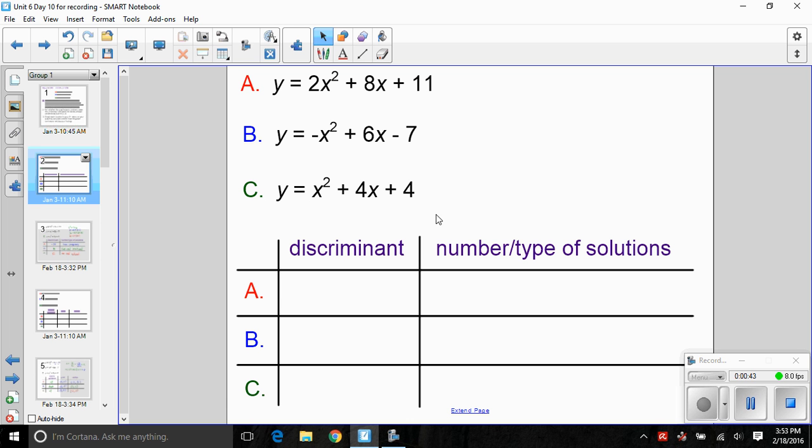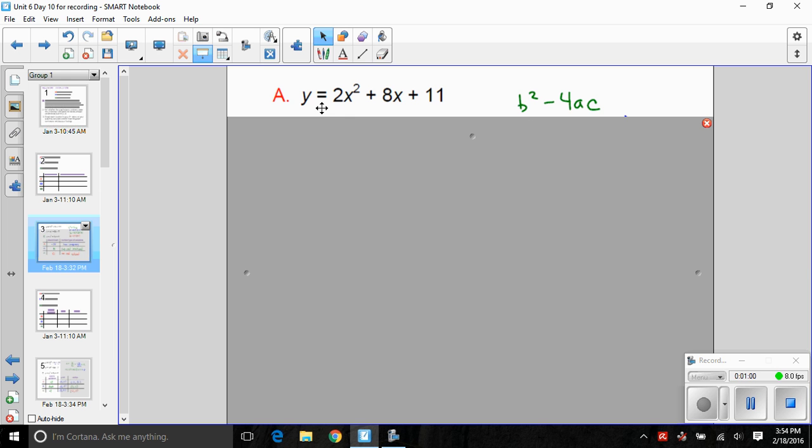If we calculate b squared minus 4ac when we're in standard form ax squared plus bx plus c, that'll tell us the number and type of solutions. For the first problem found in equation A, we'd evaluate b squared minus 4 times a times c. B squared would give us 64, then minus 4 times a would be 2, c would be 11, and we could work that out and get negative 24.